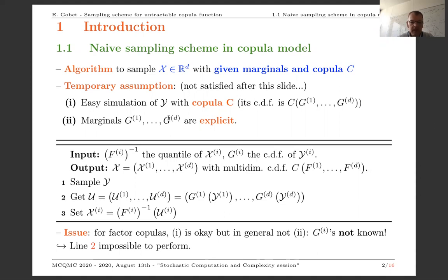This is the basic algorithm. You sample Y, you transform component-wise the sample using the marginal CDF of Y. This is a monotone increasing transformation of the components of Y. Doing so, you keep the same dependencies — the same copula function — and then you apply the quantile function to this vector U, obtaining a random variable X which has the same copula as Y and with the right marginals, because the U_i are uniformly distributed under mild continuity assumptions on the CDF of Y.